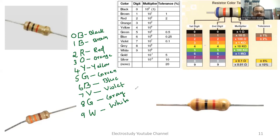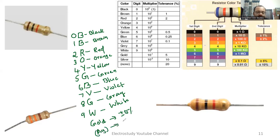Moreover, there are two or three types of tolerance. Sometimes you may observe gold — if it is gold, tolerance should be taken as plus or minus 5% of the total resistance. If you observe silver, the tolerance is 10%. If you cannot find any color, take the tolerance value as 20%.